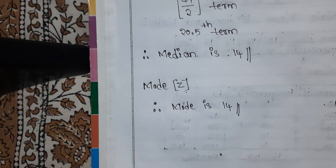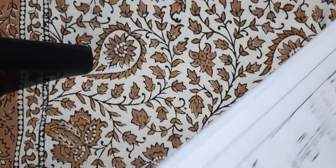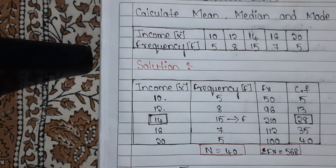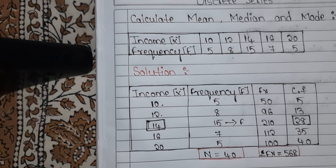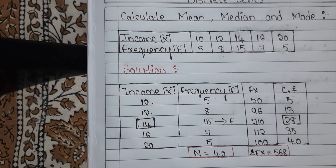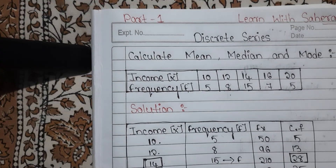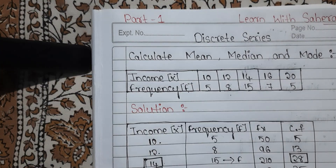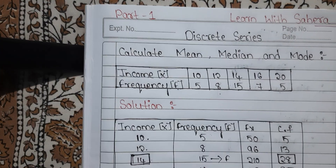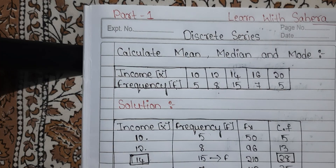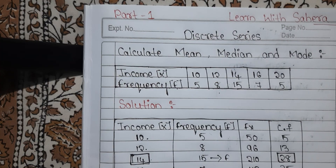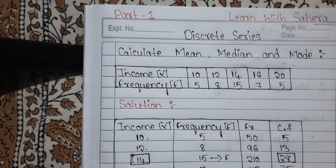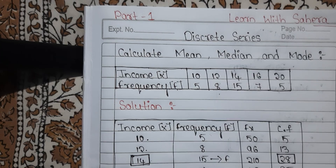So this is the calculation of mean, median and mode in discrete series. For continuous series or grouped data, watch my part 2 video. Don't forget to subscribe to our channel Learn with Sahira for more videos. For notes of all subjects and languages, text me on my Instagram. See you in the next video. Bye-bye.